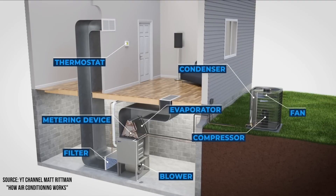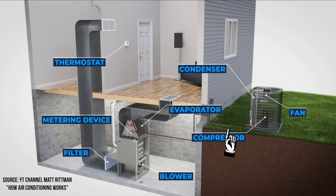The most common type of air conditioning system is what's called a split system. This is what you'll find in most residential situations — a house, a townhouse, an apartment, things like that. With a split system, the air conditioning system is broken up into two parts. There's one part that is inside and one part that is outside, and these two different parts are connected with copper refrigerant lines. The indoor portion of the air conditioner is where the evaporation happens.